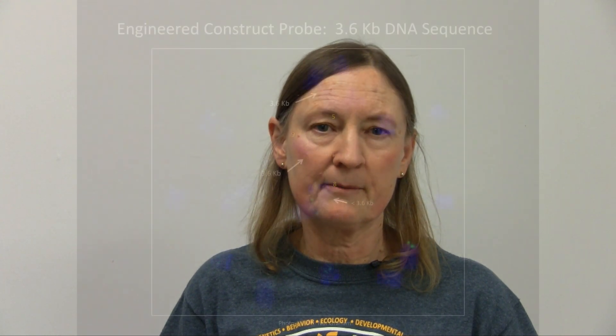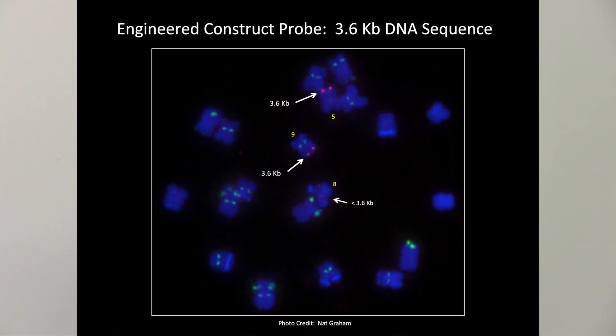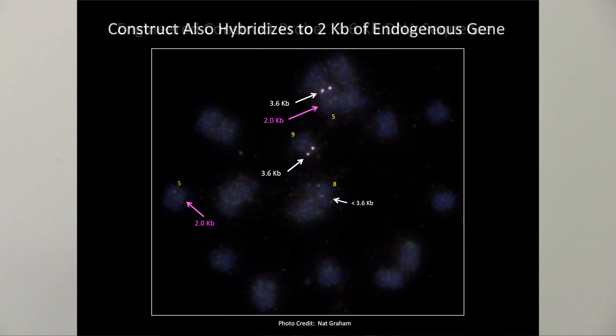As previously mentioned, FISH can also be used to identify the location of transgene insertions. This image shows 3.6 kB insertions on chromosomes 5 and 9, and a smaller insertion on chromosome 8. Less obvious on this DAPI stained image is hybridization to a 2 kB region of the transgene probe to its endogenous gene, UB1, on both homologues of chromosome 5. The hybridization signal produced by the shorter sequence is considerably weaker relative to the background noise.